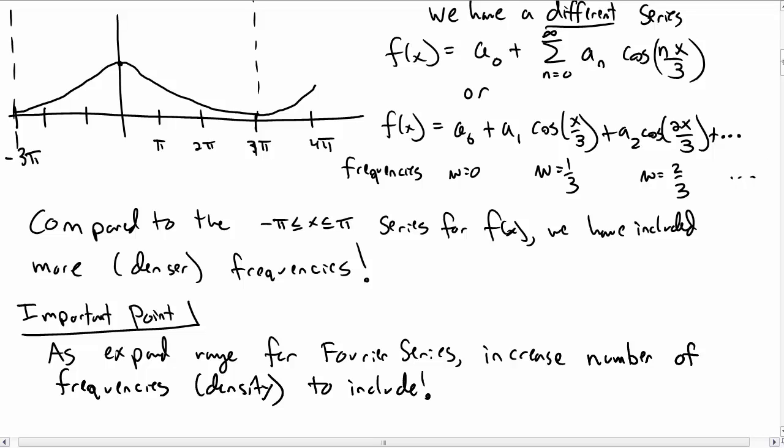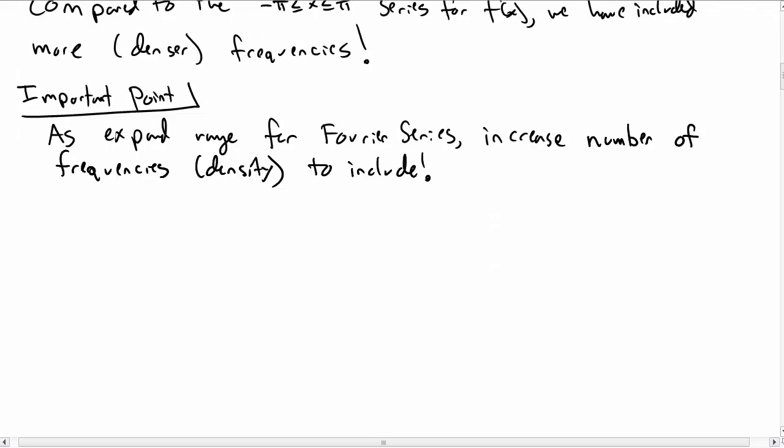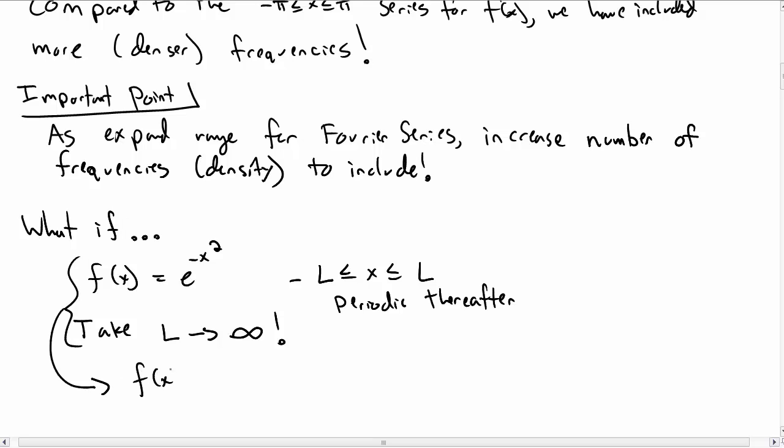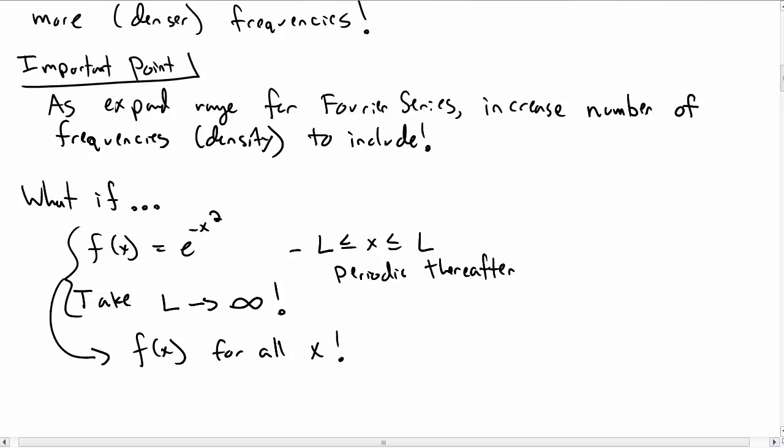So this leads to an interesting thought experiment. What happens if we took our function f(x), e to the minus x squared, from negative L to L and periodic outside of that region, and what if we then let L go to infinity? It seems like we should be able to do this, and this would give f(x) for all x.